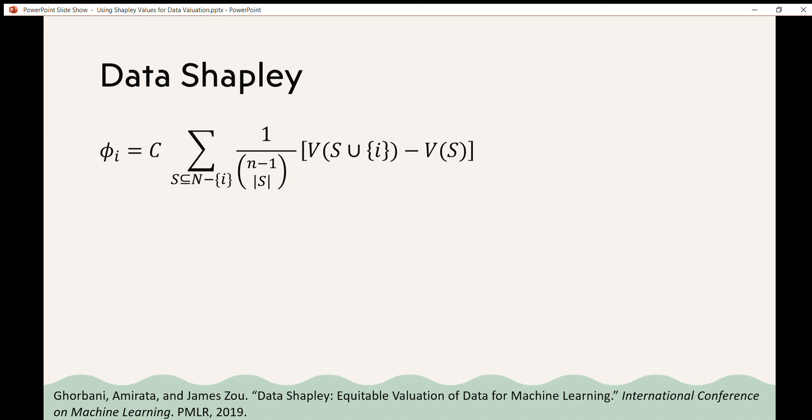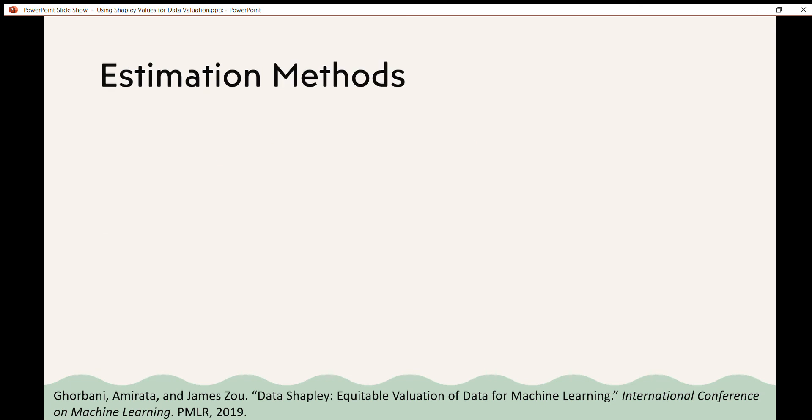So the data Shapley value phi i is defined as c, some constant c, times the sum over all subsets s in n minus i of 1 over n minus 1 choose the size of s times v of s union i minus v of s. And you can see that this is exactly equal to Shapley values if c is equal to 1 over n. Unfortunately to calculate this exactly you have to train the model on every subset of the data and this is exponential in time.